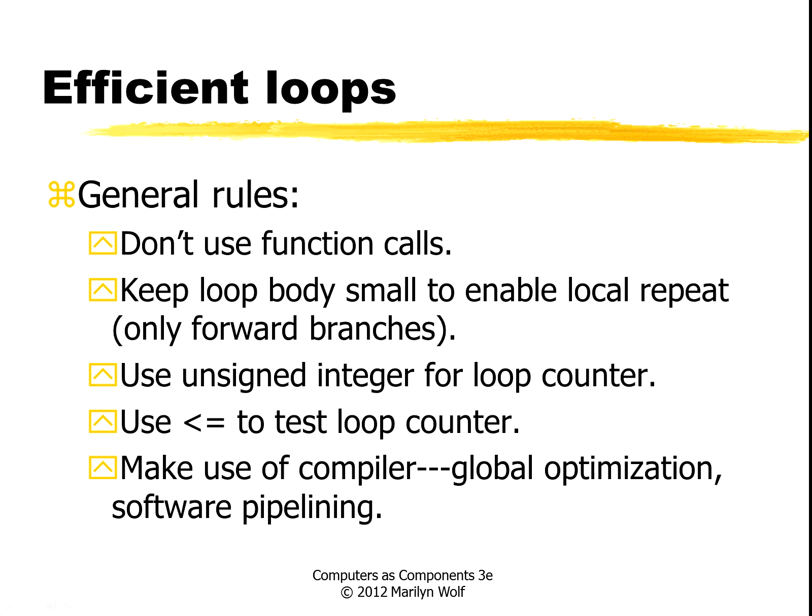There are some rules for writing good assembly code, particularly for loops. Don't use a function call inside a loop body — function calls outside a loop are fine, but putting them inside slows things down. Keep the loop body small so that you can use local repeat instructions, and you should only use forward branches in a loop body that you want to use the repeat instruction for. Use unsigned integers for the loop counters and use less-than-or-equal-to to test the loop counter. The compiler for the C55X does a good job of global optimizations.